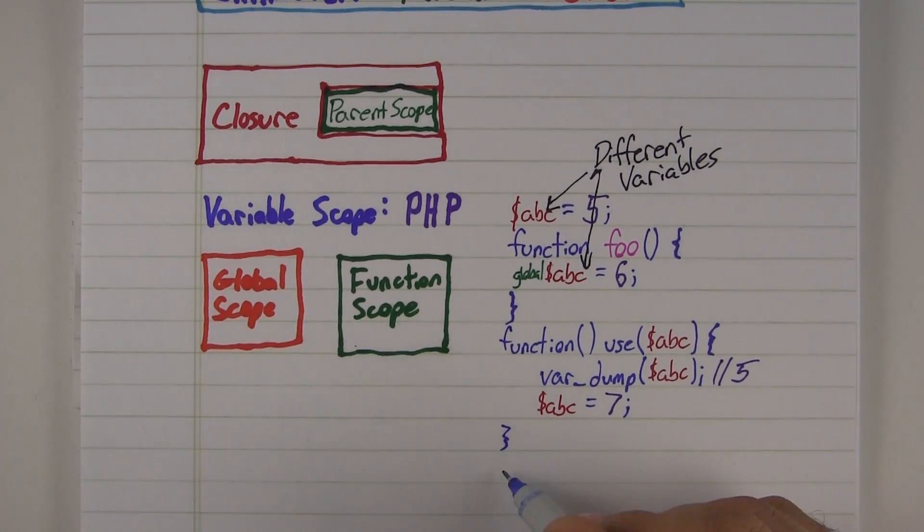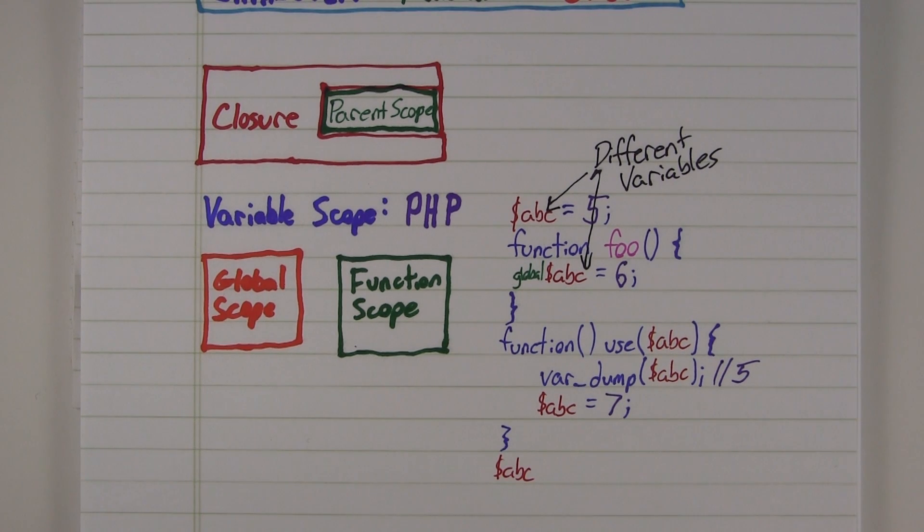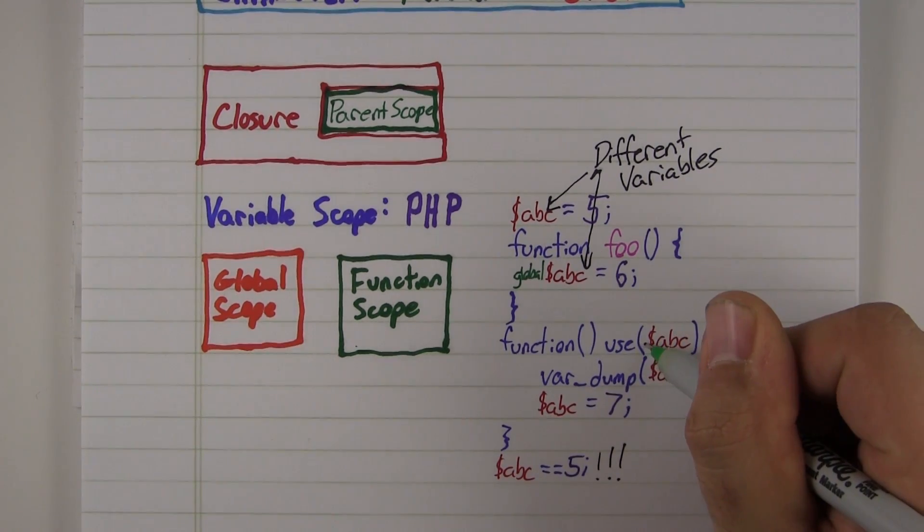The variables are actually copied into the closure scope. Therefore, in PHP, each scope is completely independent from every other scope. And the only way to tie two scopes together is to use variable references.